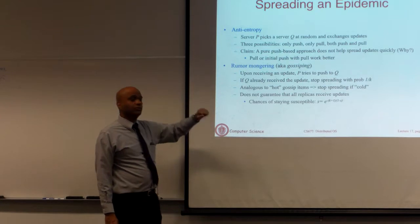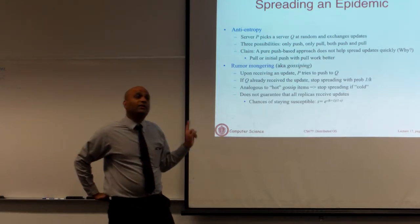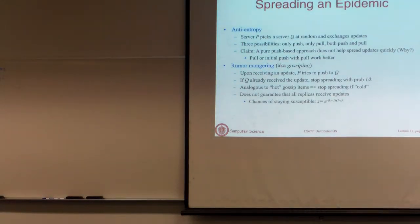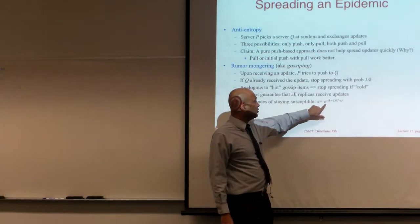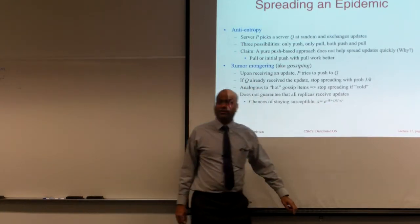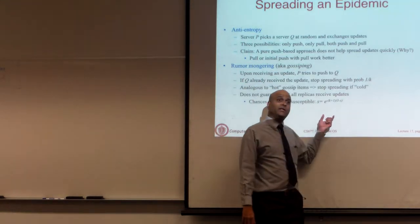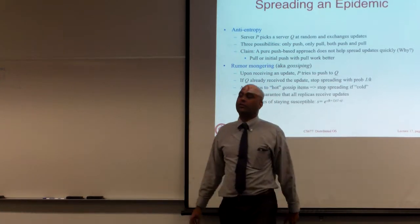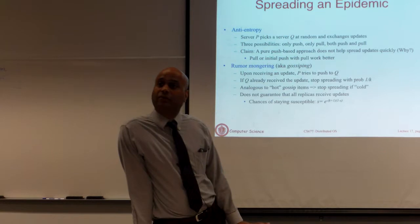K can be tuned. If K equals 2, you toss a coin and with probability half you continue and probability half you stop. Every time you encounter a node that has already seen the update, you toss a coin and decide whether to stop. You can tune K to control how aggressively you back off from spreading the gossip. The probability of staying susceptible is e to the power of K minus K plus 1 times 1 minus s — an exponential probability. There is always a non-zero probability that some nodes will never become consistent, because all spreaders stopped before reaching them.